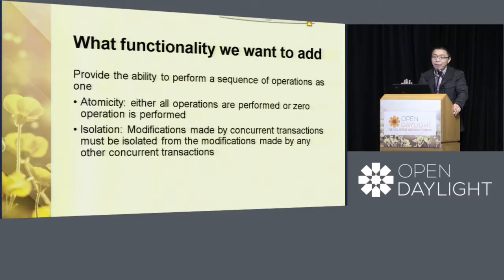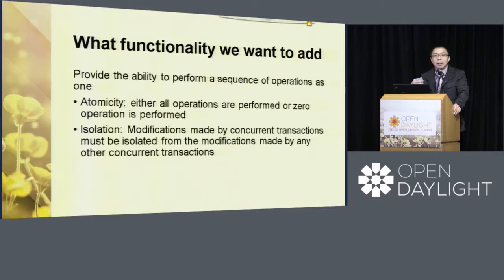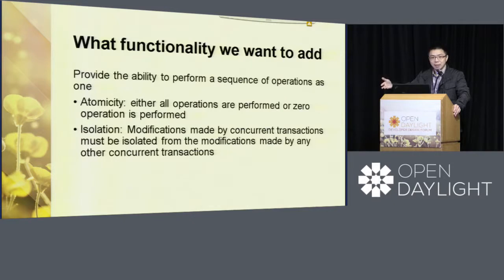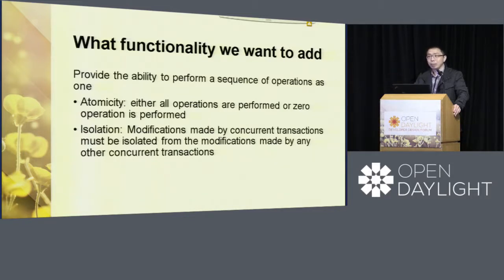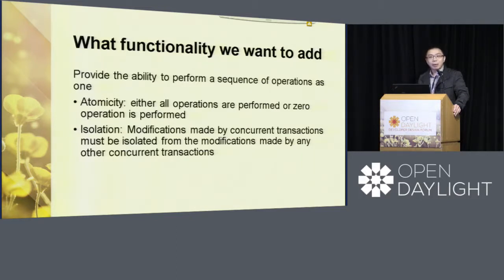The problem I'm facing is: how do I provision it? Right now in netconf when we program, we program one by one. In the normal case it's okay, but once an error happens, the application needs to roll back. For example, if operations one, two, three succeed and the fourth fails, I need to roll back two and three as well. That's what we call atomic — the operation needs to be either all success or zero — nothing put on the network.